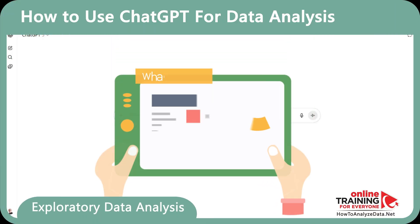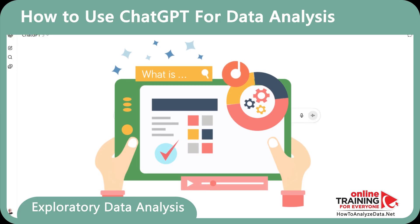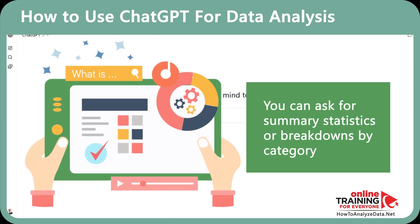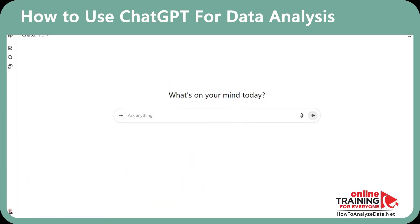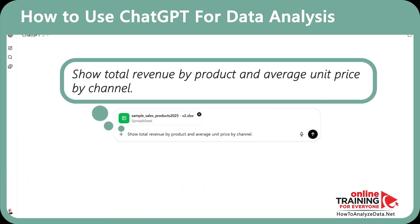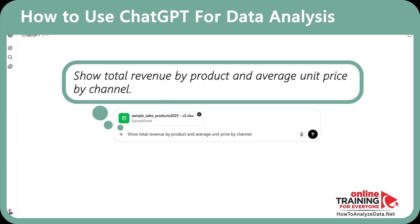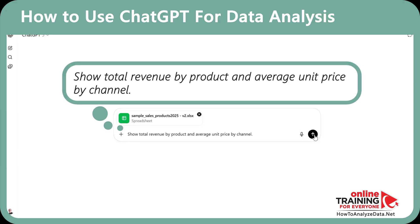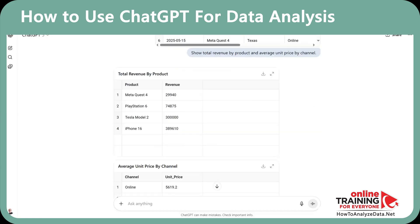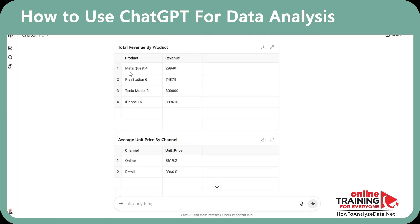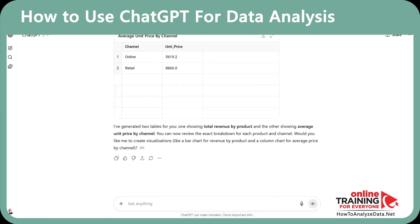Exploratory data analysis helps you quickly understand trends. You can ask for summary statistics or a breakdown by category. Here's the prompt I'm going to use: 'Show total revenue by product and average unit price by channel.' EDA is crucial because it reveals patterns, outliers, and key drivers in your data set. If you look closely at the output, you'll see that ChatGPT generated total revenue by product as well as average unit price by channel.